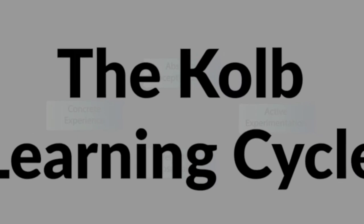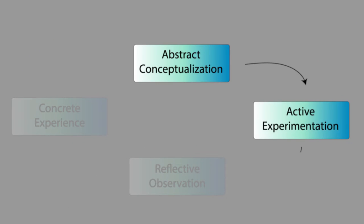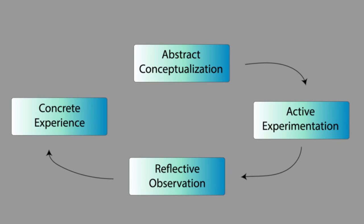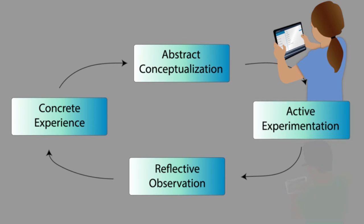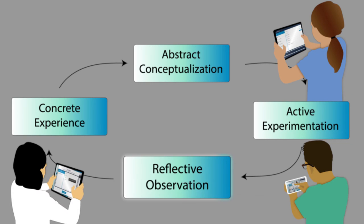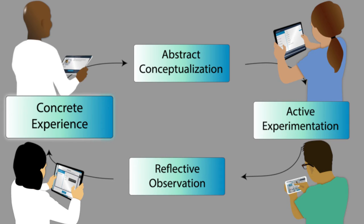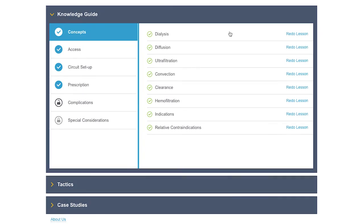The Kolb learning cycle states that although learners have a preferred learning style, they will actually learn best when taken through activities to incorporate all learning styles. Learners move through abstract conceptualization in the knowledge guide, then have activities for active experimentation in the short problem or tactics section, and receive feedback on their actions to allow for reflection, and then go through more cases to provide additional experimentation, completing the cycle over and over.